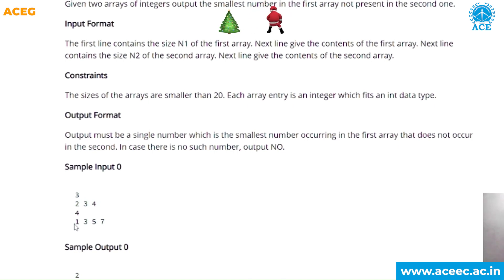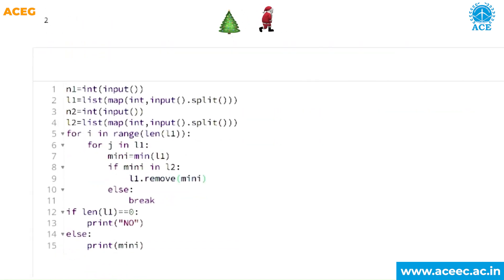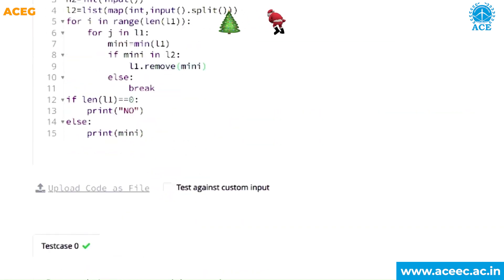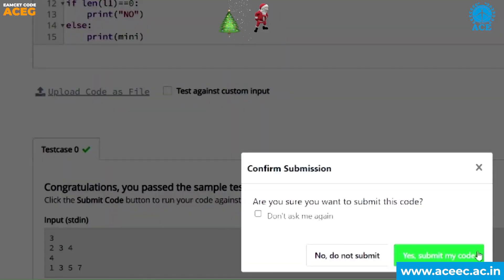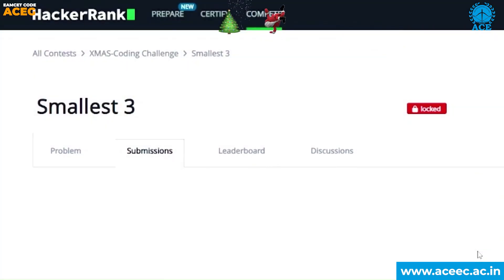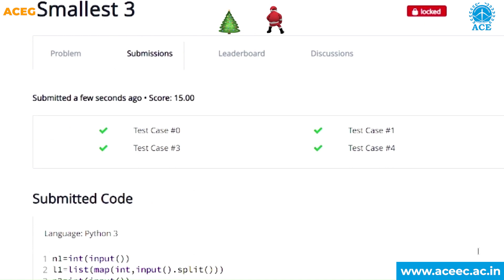So the output here will be two. Once I run this code, the test case is passed. There are hidden test cases as well, so I'll submit and check — yes, all the test cases passed. Thank you.